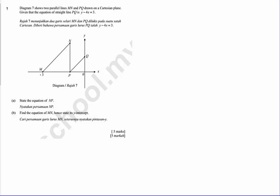In this question, diagram seven shows two parallel lines MN and PQ, drawn on the same plane. MN and PQ are parallel. Given that the equation of the straight line PQ is y minus 4x equals to 3, the question asks you to state the equation for MP.